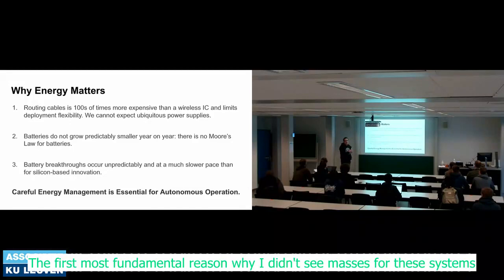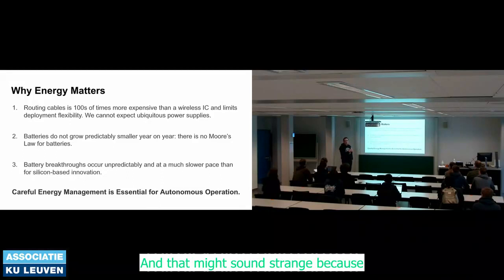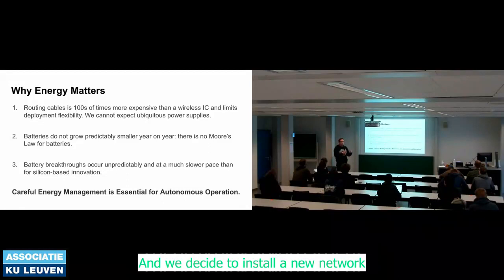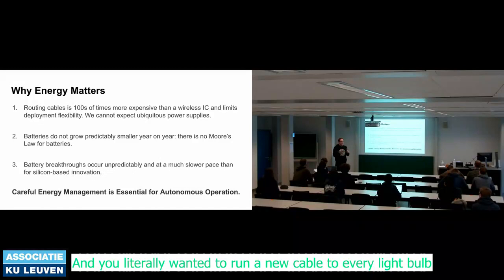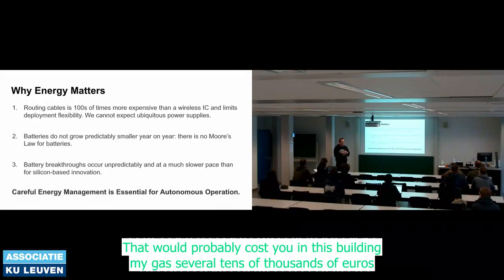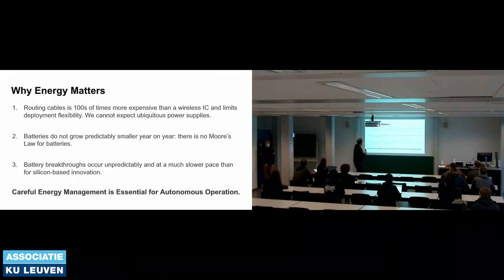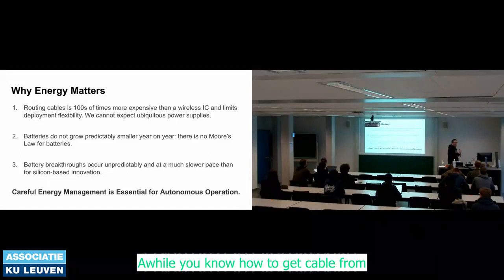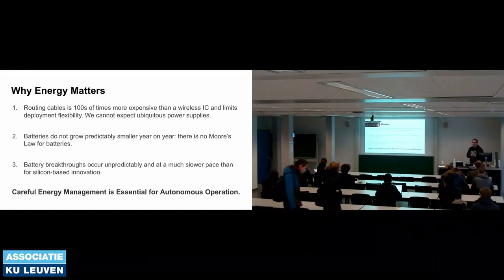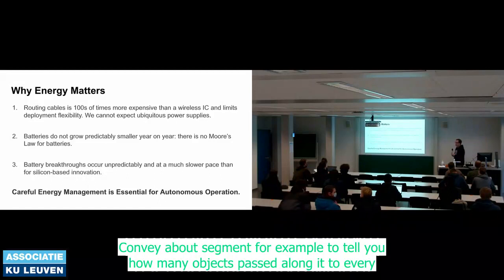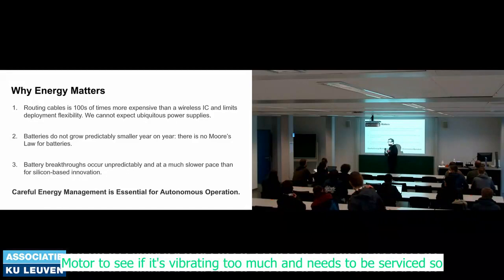The first most fundamental reason why energy matters is that cables are really expensive. If you think about a building like this and decide to install a new network for smart light bulbs, running a new cable to every bulb would probably cost several tens of thousands of euros. It's increasingly standard to add communication to every conveyor belt segment or motor in a factory, and running dedicated cables gets expensive very quickly.